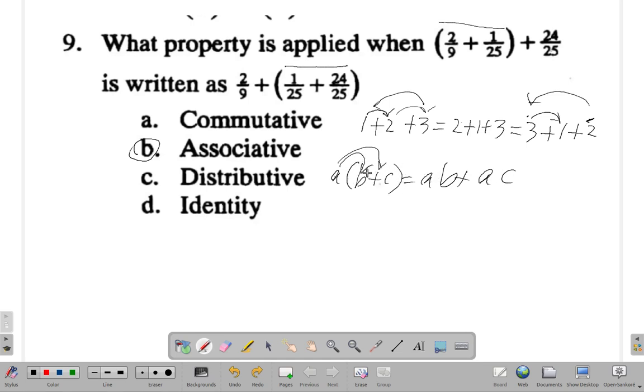You open the brackets and spread it all around, you distribute the various numbers around. So that's distributive. That's not what we have here though—it's associative. Identity, well, you don't really have identity working out here.